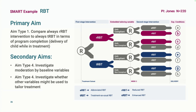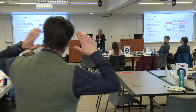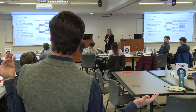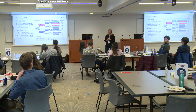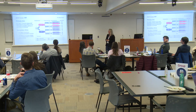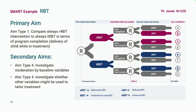Their primary aim — the thing they're providing the most assurances about — was: do I do the traditional thing, which has a bunch of problems, or can I get away with reduced? And yet they're still going to answer all the other questions. Secondary aims are about moderators — Type 4 questions — and whether there might be other variables that could be used to tailor treatment more deeply.